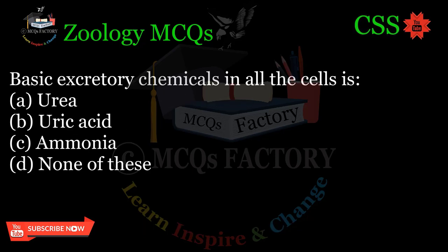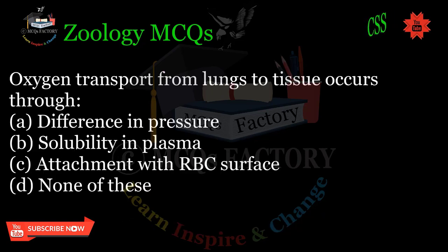Basic excretory chemicals in all the cells is: A. Urea, B. Uric acid, C. Ammonia, D. None of these. Correct answer: B.